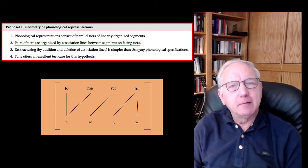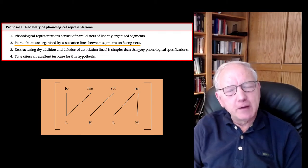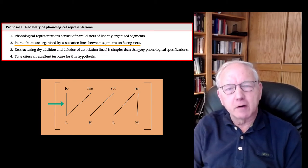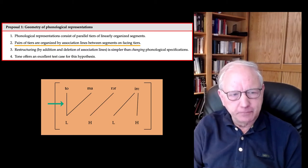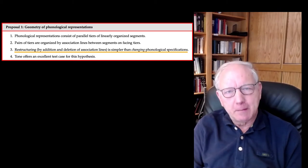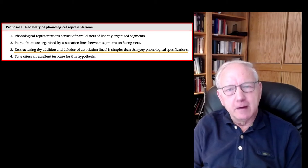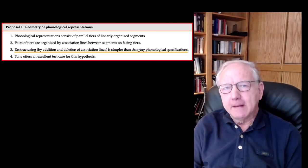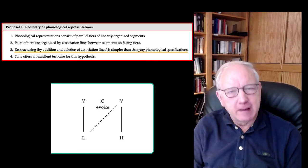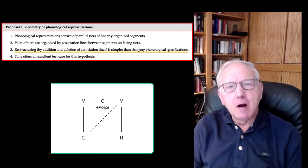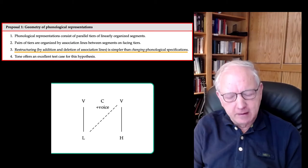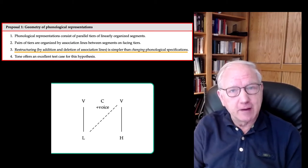The second principle is that parallel tiers of segments are organized by association lines. Association lines are therefore a very important part of the theory and of the representation. The third principle makes explicit the importance of association lines: the proposal is that a phonological rule is much simpler if it adds or deletes association lines. Such operations are much less costly than the alternatives — insertion of a segment, deletion of a segment, or changing the feature of a segment.